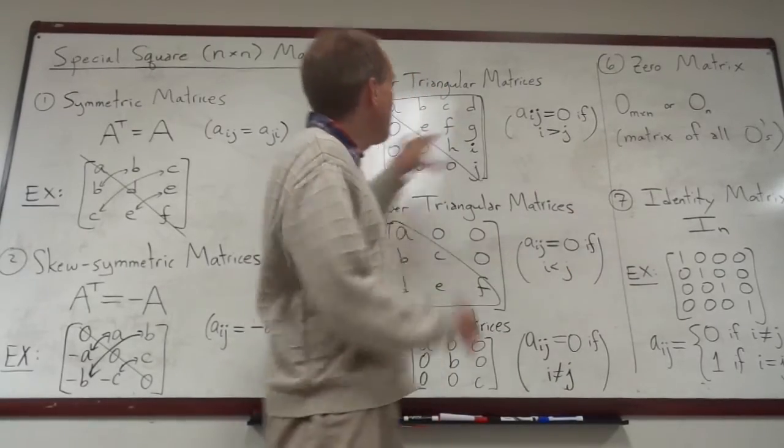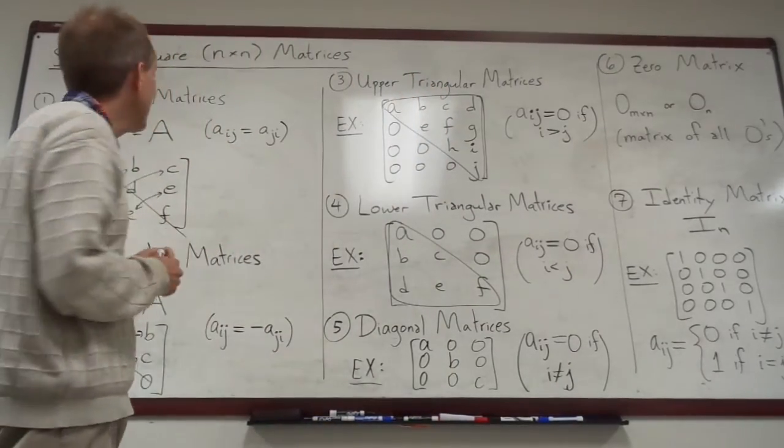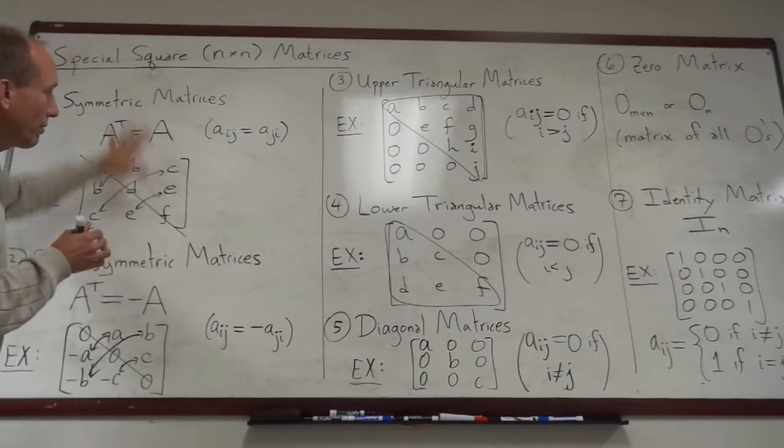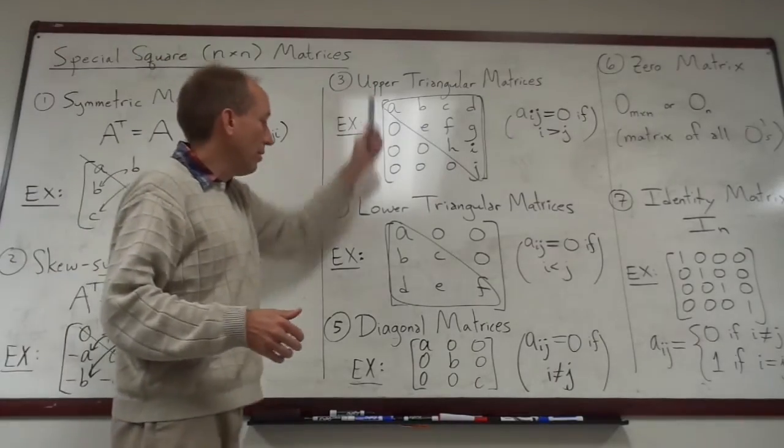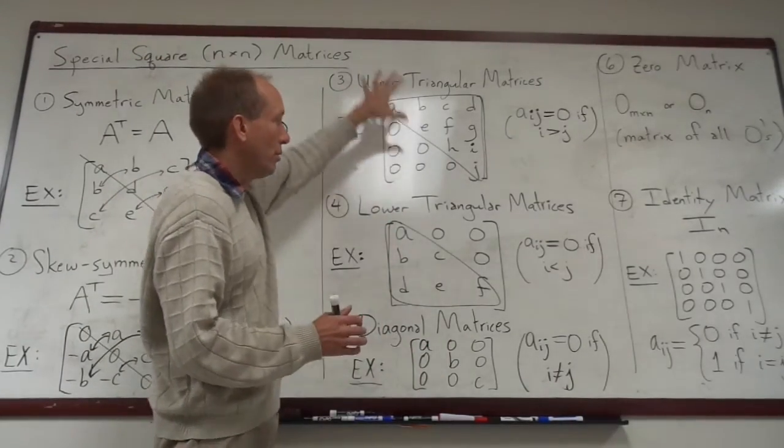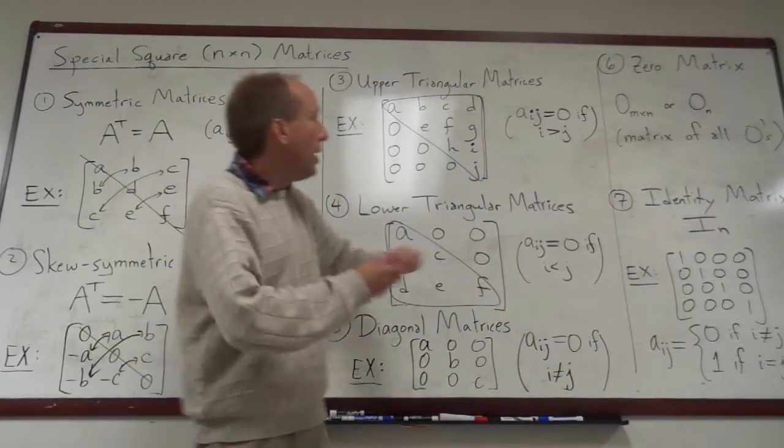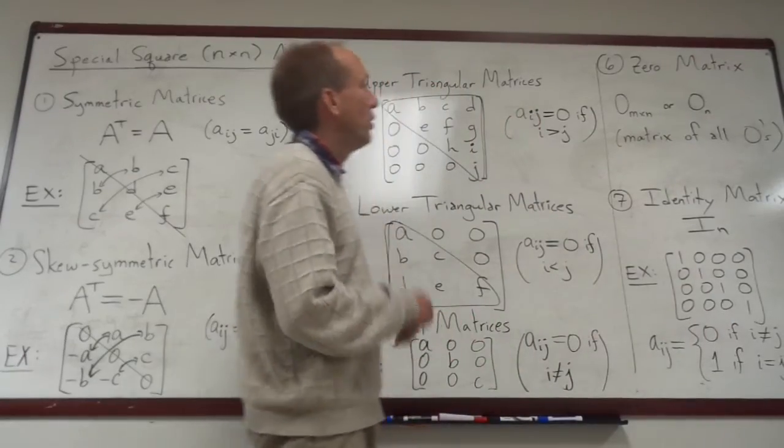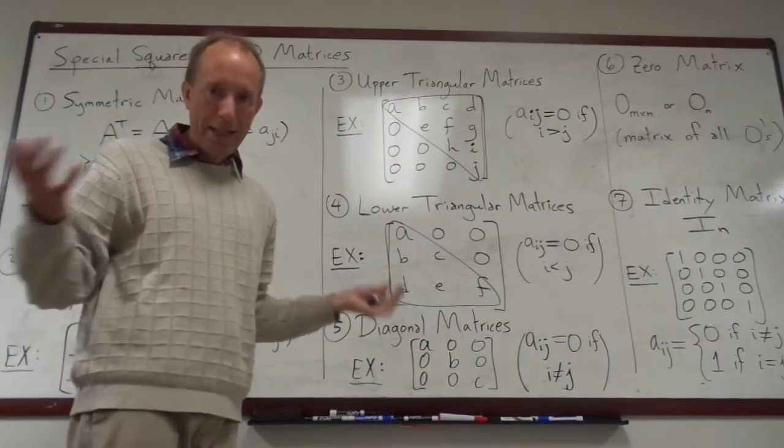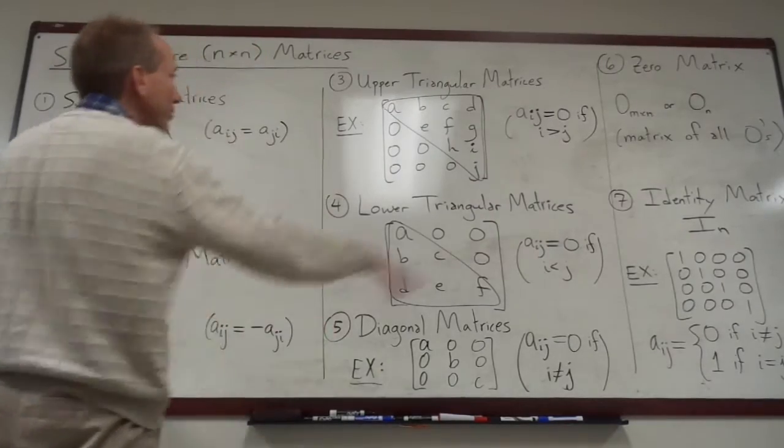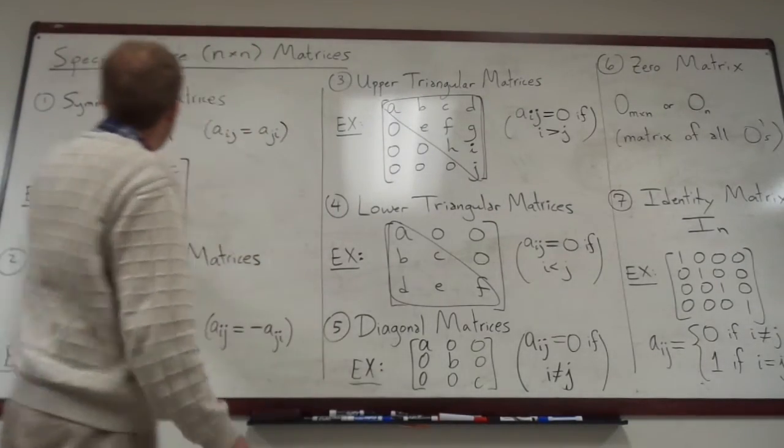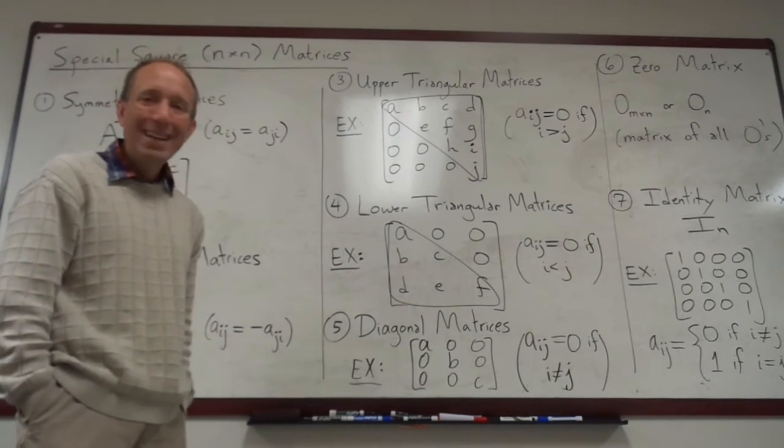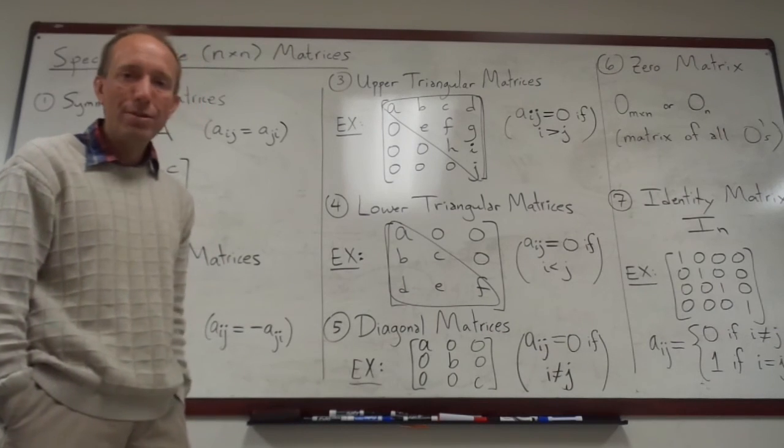So anyway, we're going to be using these matrices a lot this semester. And I just thought this is a great time to just kind of summarize it really quickly. The symmetric and skew symmetric ones, those kind of go together. Upper, lower, triangular, and diagonal matrices, those kind of are the same general idea. And then the zero and identity matrix is like the zero and the one. Those two matrices are often thought about together. So we kind of have seven different categories here. And those are most of the special matrices that we're going to see this semester. And I just thought it would be good to summarize them for you. Okay. Hope that that's helpful. And I will see you guys soon. Thanks.